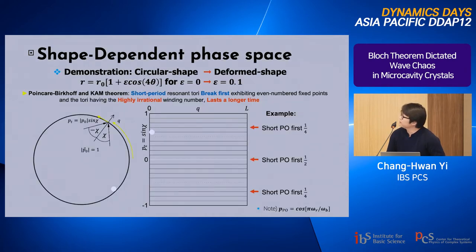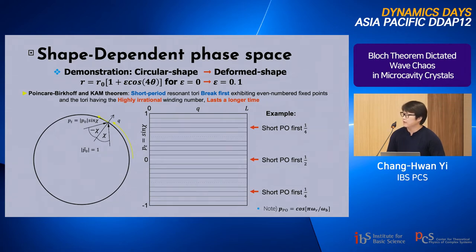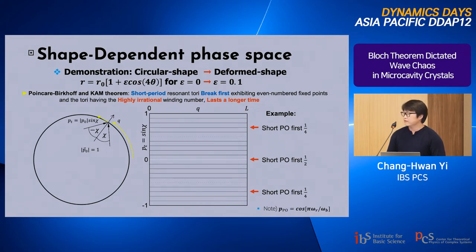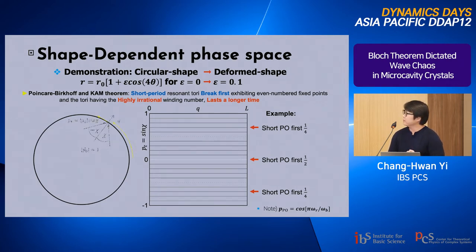The Poincaré coordinate: given a particle launched inside the billiard, at each reflection point we record the arc length where the particle bounces off and the tangential component of the momentum of the incident particle. In the previous slide I implied a sharp distinction between integrable and chaotic systems, but that is not true. In fact there is an intermediate regime between the integrable and chaotic systems.